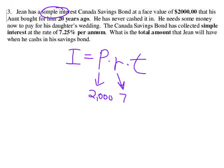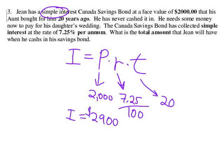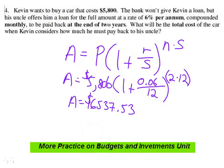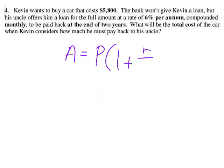Here's a simple interest problem. Canada Savings Bonds are often simple interest. If you put $2,000 in a Canada Savings Bond, after 20 years you'll earn $2,900 in interest, so you'll have $4,900 total. It's a nice thing to do for a nephew or whoever.